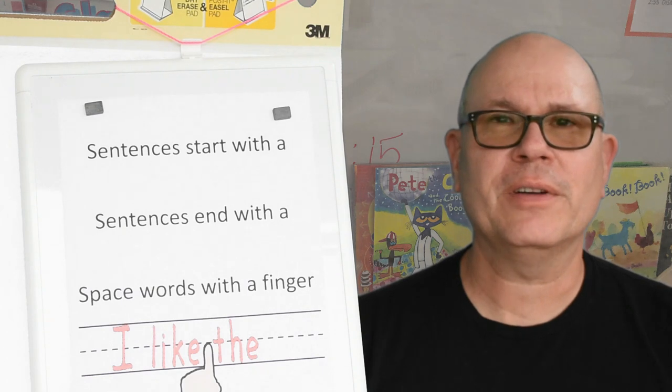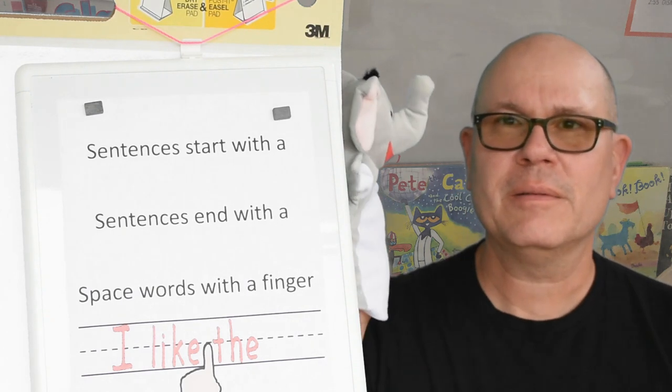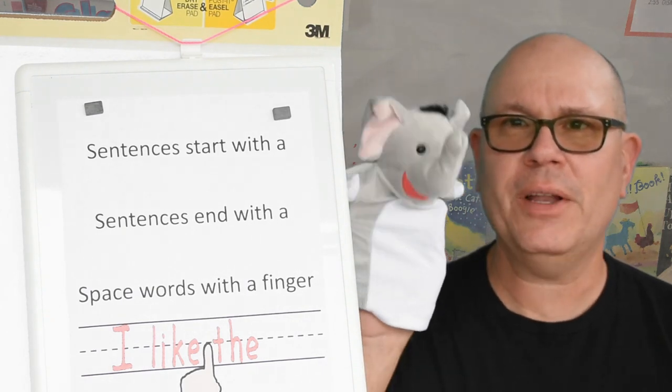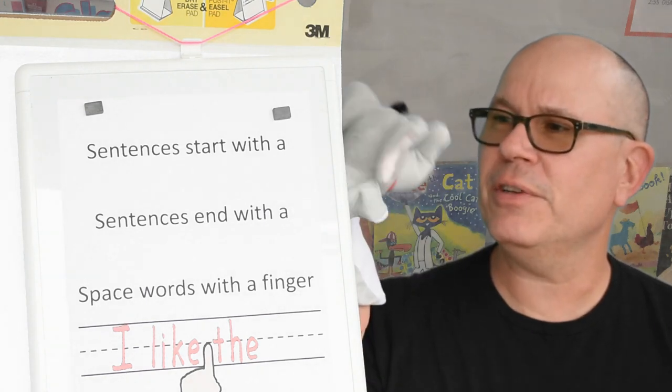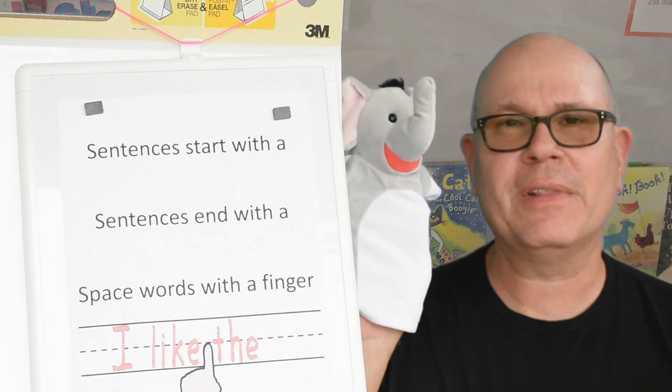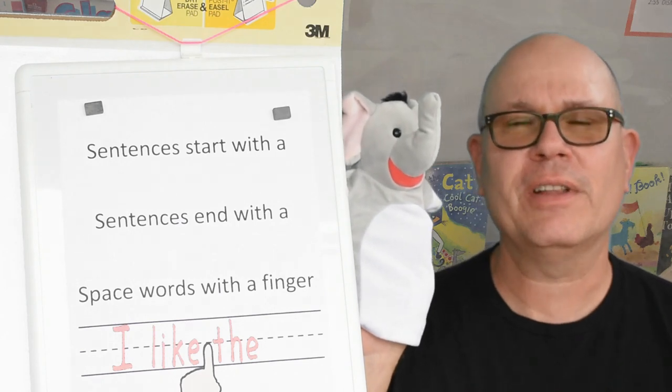Let's review the parts of a sentence. Maybe Ella can help us. Hello. Hi Ella, how are you? I'm doing good, Mr. Woods. Well, I'm glad that she's here to help us. So let's take a look here.